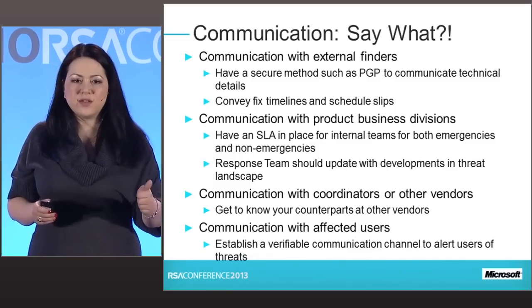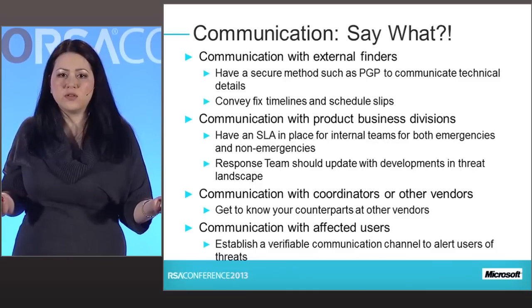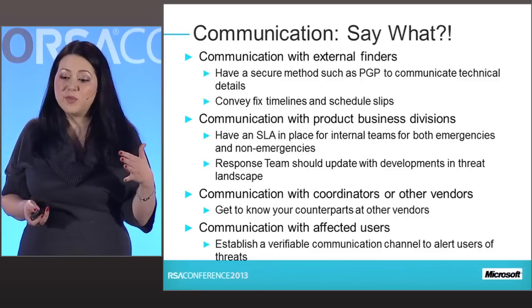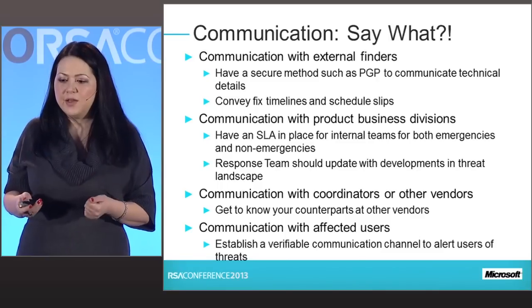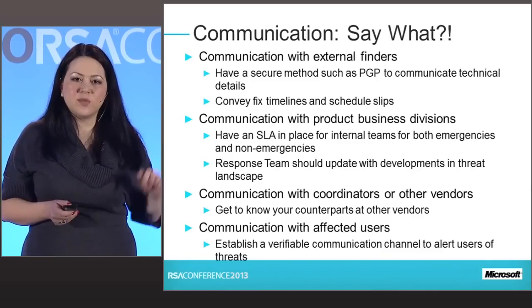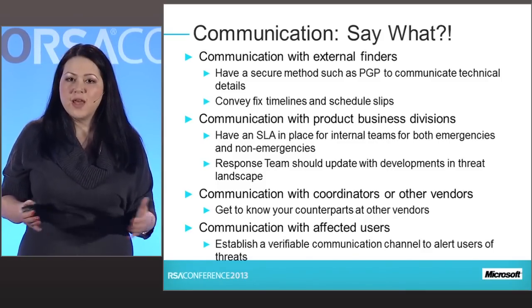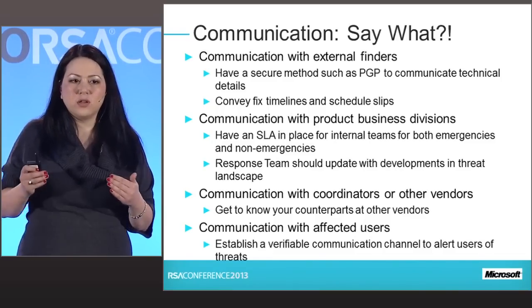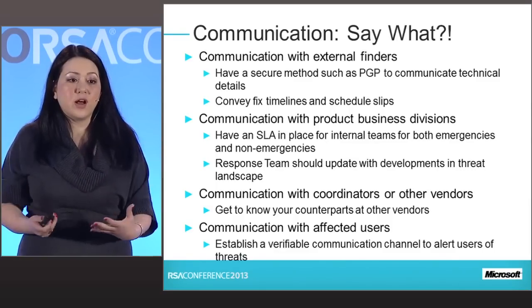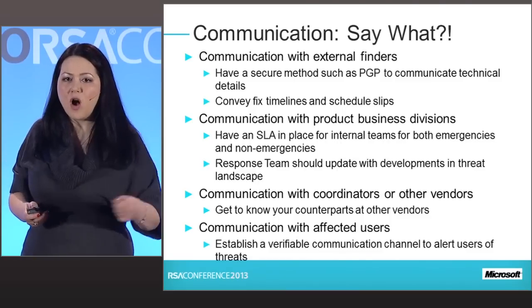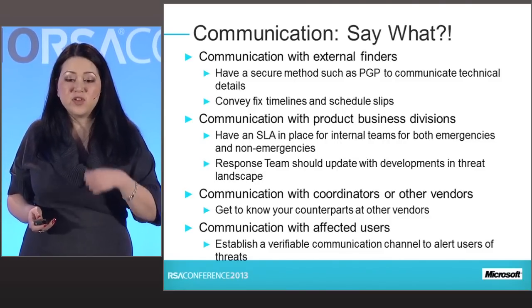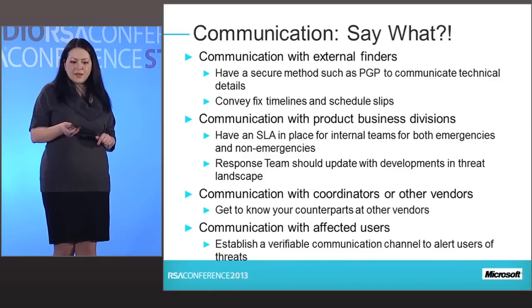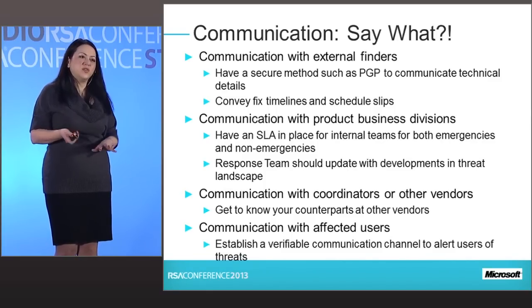Communicate with the external finders throughout the process. Make sure your communication channels are secure for exchanging vulnerability information. Convey any timeline slips promptly to keep that relationship open and transparent. Communicate internally with your product business divisions — establish SLAs within your own organization for how quickly product teams must get back to your internal security teams about whether specific products are affected. And communicate with coordinators and other vendors for multi-vendor issues, as well as externally with affected users by releasing advisories.